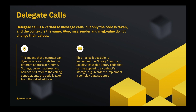There is a variant of the message call called delegate call. It is identical to a message call, apart from the fact that the code at the target address is executed in the context of the calling contract. That means the current address, balance, and storage are still referring to the calling contract, but the code is taken from the called address. Also, msg.sender and msg.value do not change their values. The existence of delegate call makes it possible to implement library features in Solidity — you can reuse library code that can be applied to a contract's storage, to many contracts' storage, just by using delegate calls.